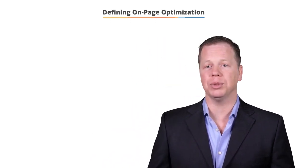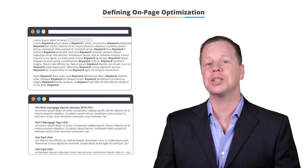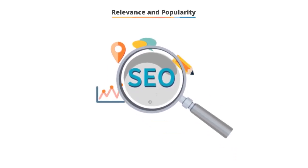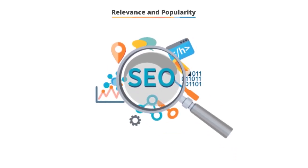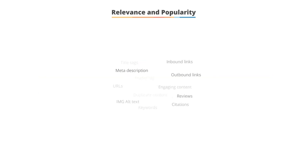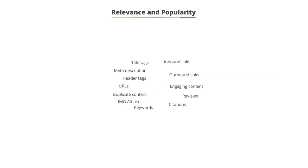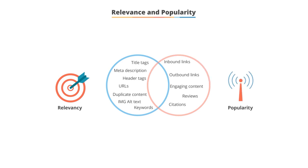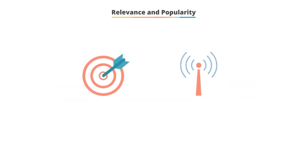On-page optimization includes both content and HTML source code optimization. Search engine optimization can be very complex. When you're trying to understand it for the first time, I find it easy to break it up into general concepts. When you look at the hundreds of signals that go into SEO, they can be broken up into either relevancy or popularity — so relevancy and popularity. Out of all these signals, they fit into one of these two things.